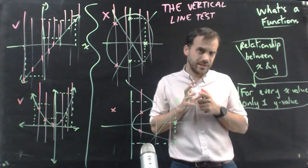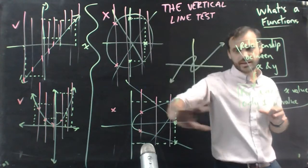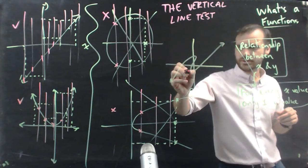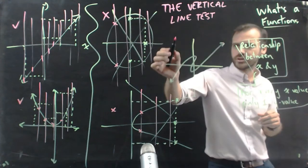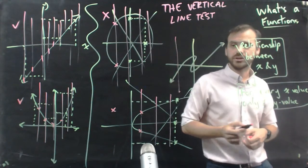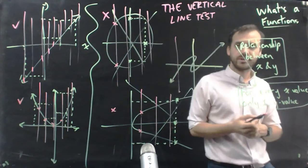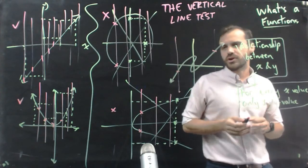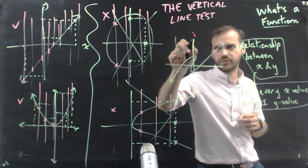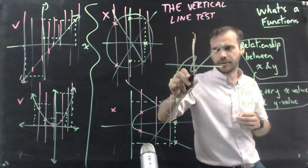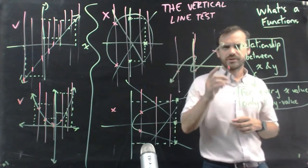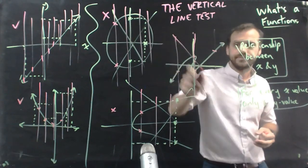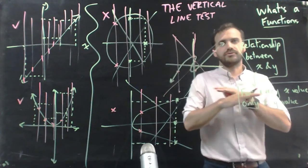Now let's look at an edge case. Here's a Cartesian plane with a relationship between x and y. You can see it comes up, then it doubles back on itself and keeps going. If I draw a vertical line here, this might be a function — it only passes through once. But I only need to find one place where I can draw a vertical line and pass through multiple times. If there is one place in the relationship where I can draw a vertical line and pass through multiple times, that is not a function.